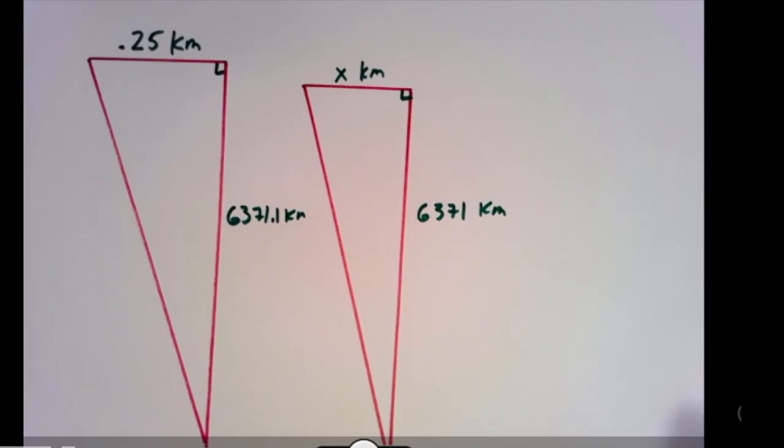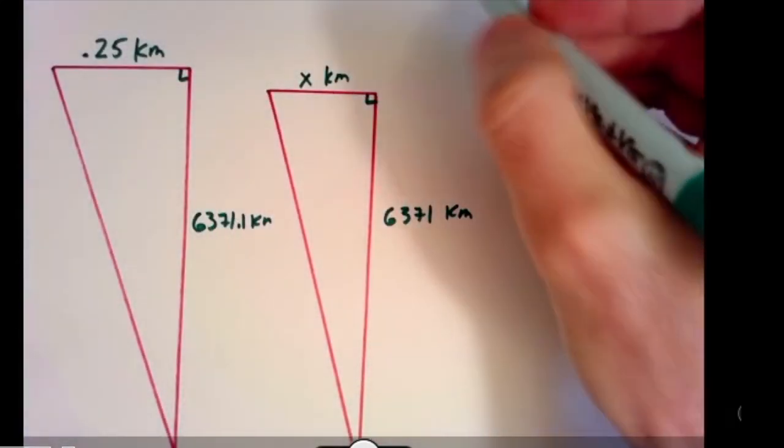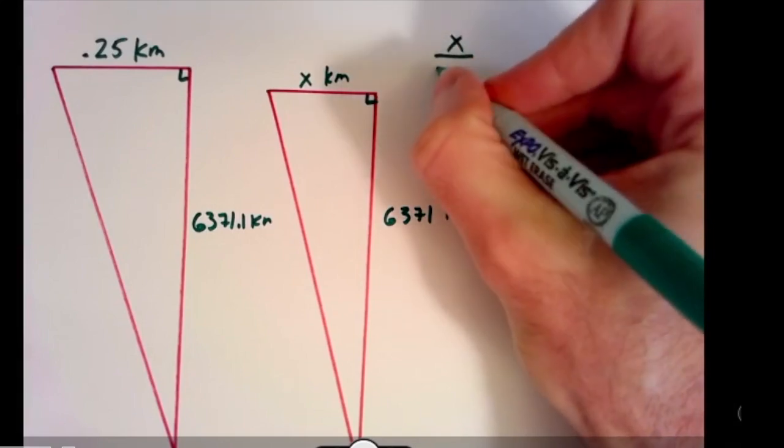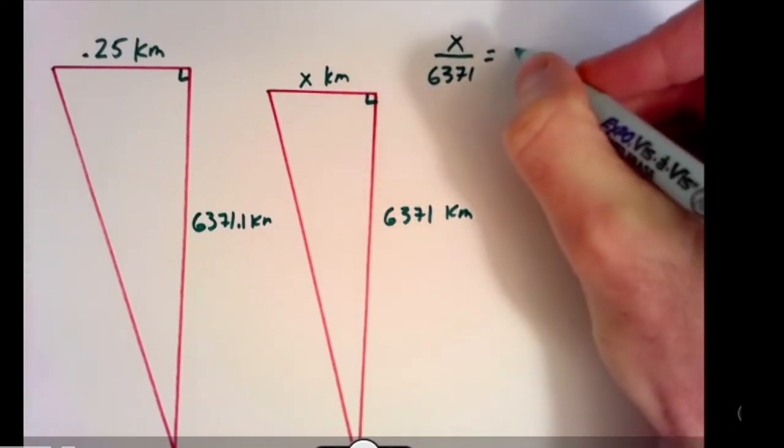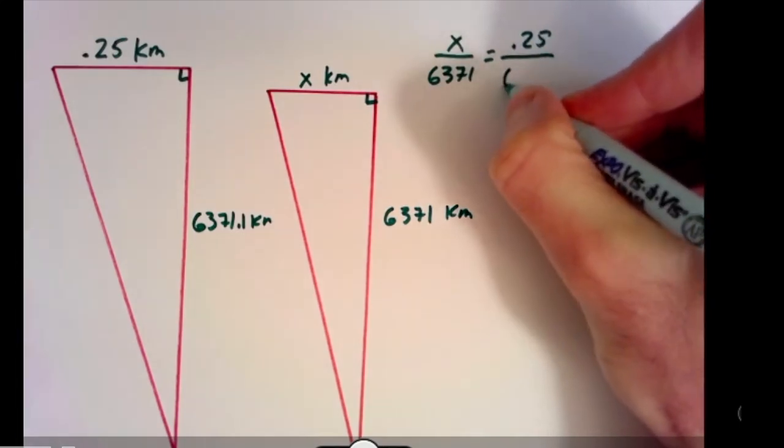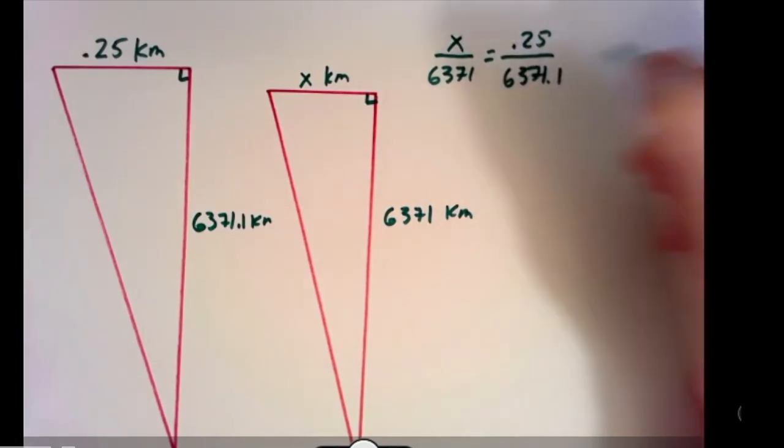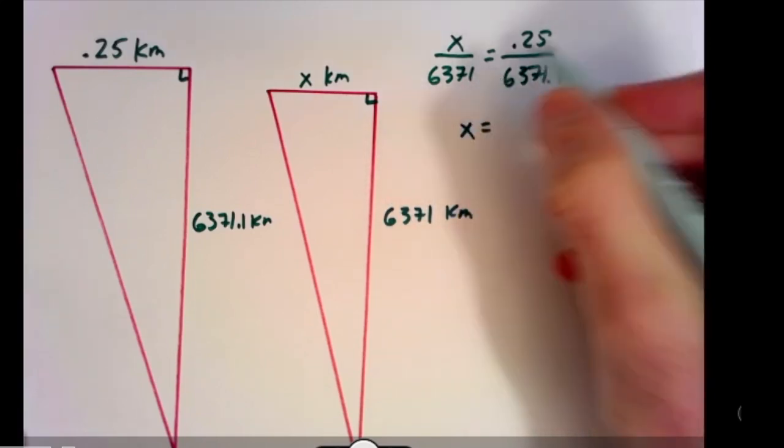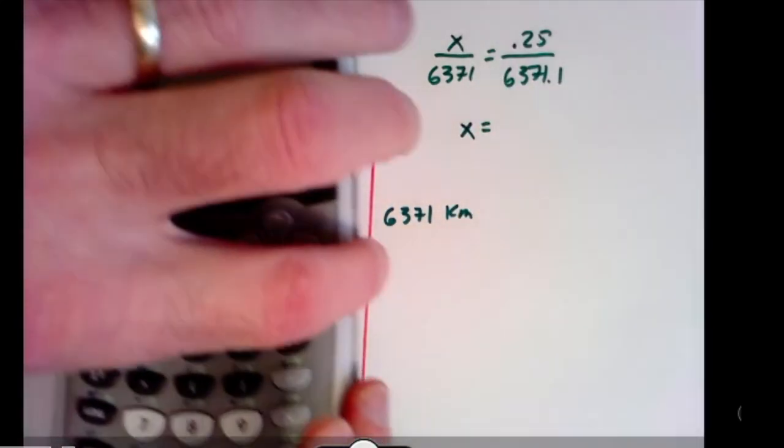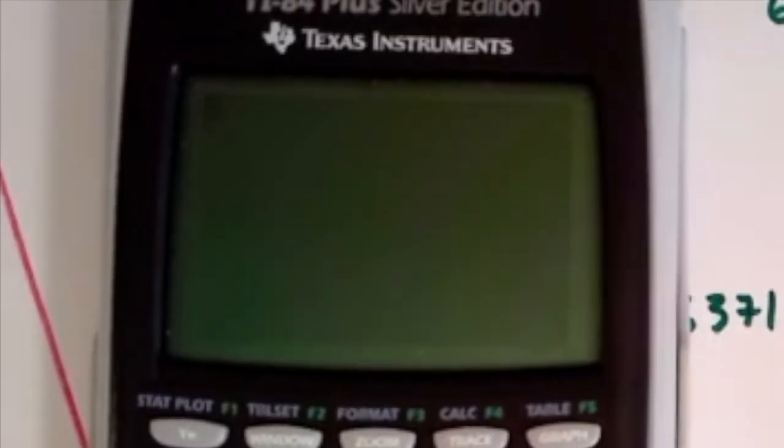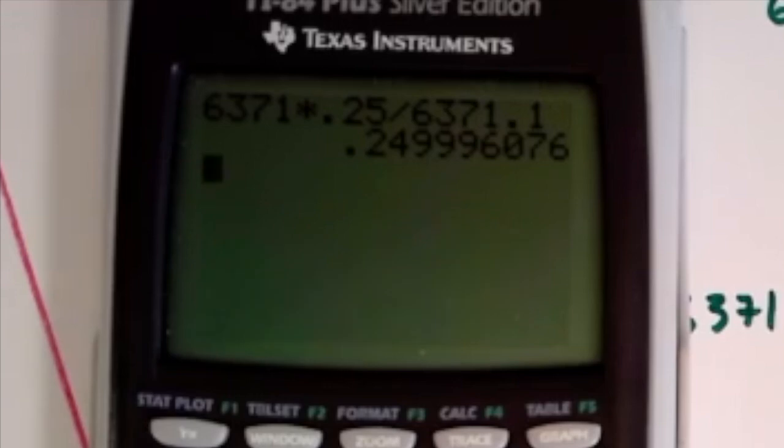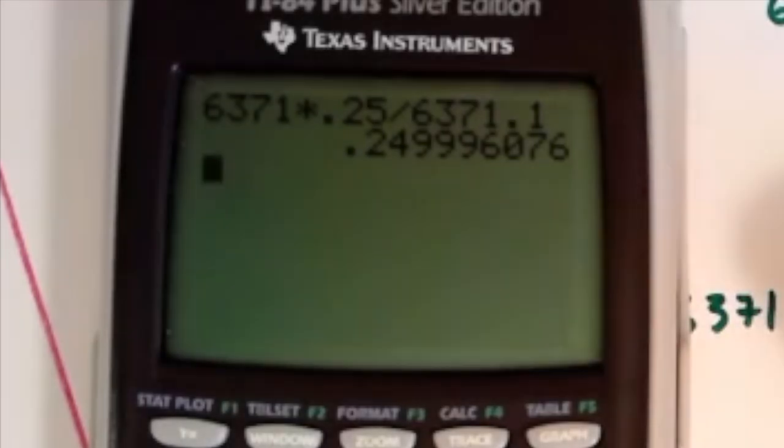And now we can set up our proportions to solve for this length here. I'll do the internal ratios. So you have x over 6371 is equal to 0.25 over 6371.1. We'll multiply both sides by 6371 to solve for x. And that gives us a length of 0.249996076 kilometers across.